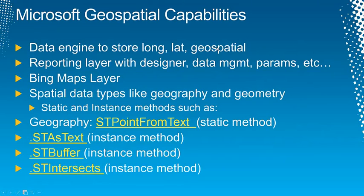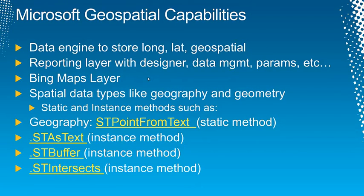The abilities built into Microsoft geospatial include a great database engine to store data, lat-long geospatial information, key performance indicators, metrics, and things like that. On top of that you want a reporting layer with a designer like Reporting Services that has data management abilities to create datasets and data sources with parameters. You also want a mapping layer like Bing Maps to plot mapping data on a visual surface, as well as spatial data types like geography and geometry that have methods — for example, creating a point from a well-known text field, or spatial-temporal ST methods to show data as text.